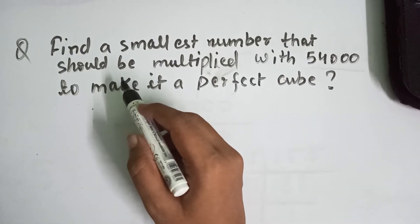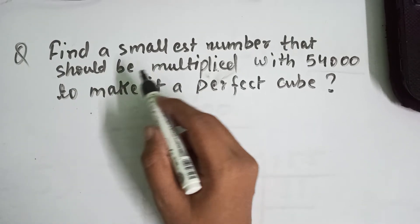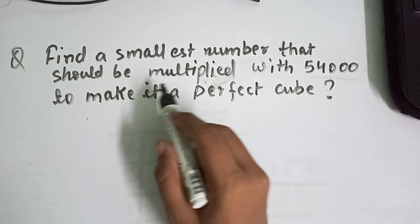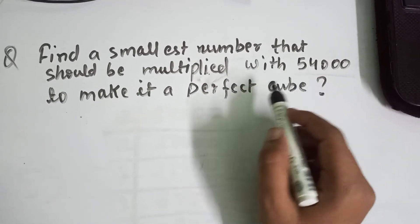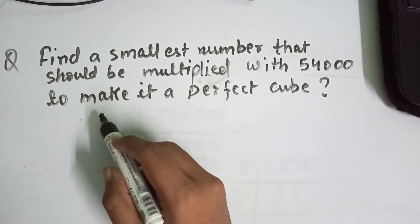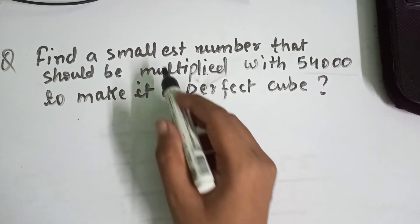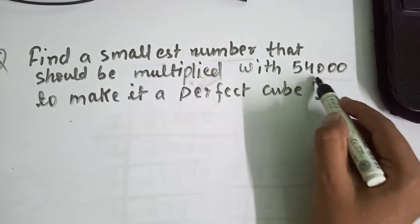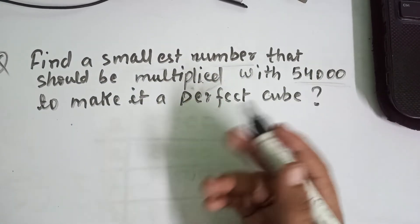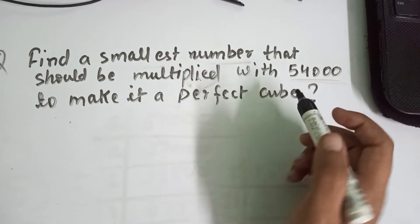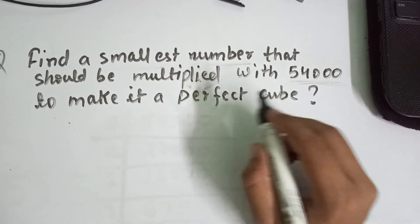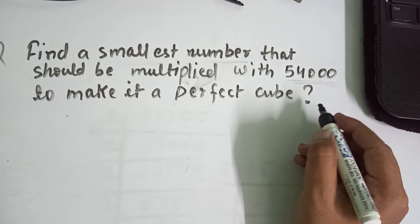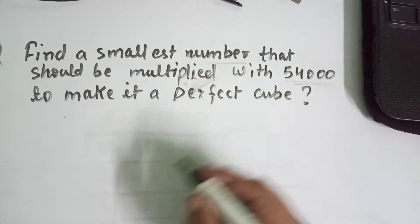In this video we are going to solve a question where we need to find the smallest number that should be multiplied with 54,000 to make it a perfect cube. Right now it is not a perfect cube, so we need to find the prime factorization of this. Let's follow the process.